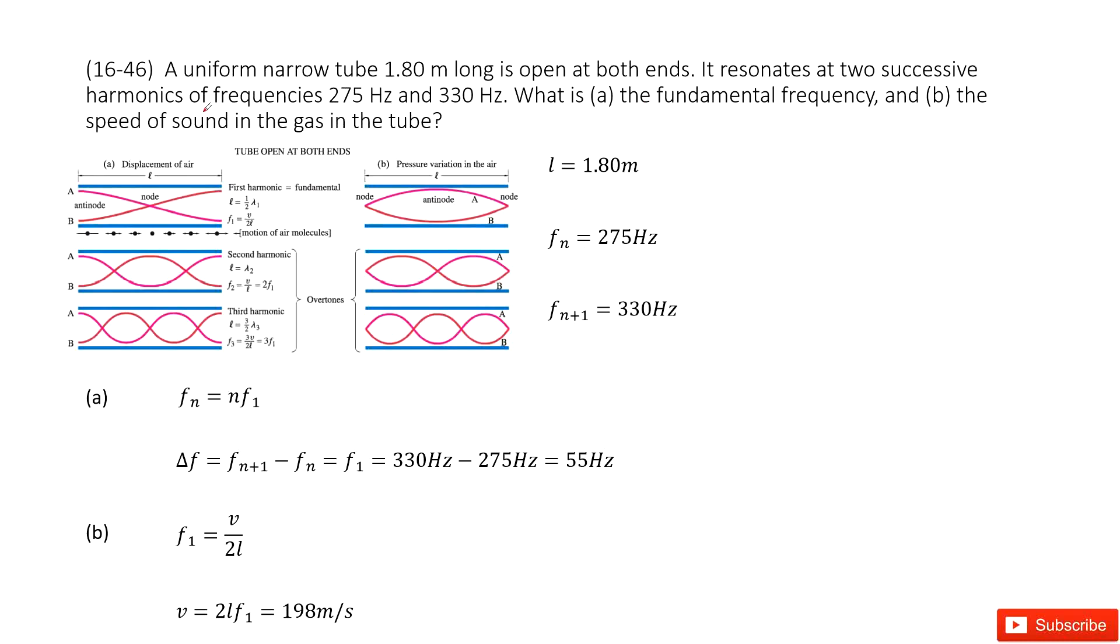The next one asks to find the sound speed in the gas. So it looks like this tube is in the gas, it's not in the air. How can we get it? We can look at this function. F1 equal to V divided by 2L. In this function, we can convert it to get a function for V equal to 2L F1. You can see L is given, F1 is given from the A part. So you can get the final answer there.